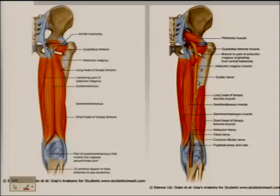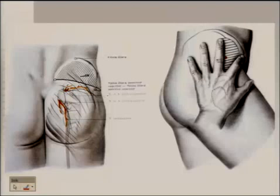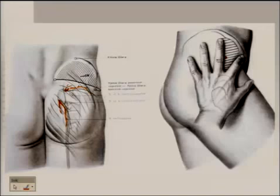A preview of that posterior thigh compartment: the great sciatic nerve lies amidst the very large muscles known as the hamstring muscles. When doing the dissection, there is a certain amount of locations where these blood vessels and nerves are, and you want to avoid those. There is a safe area in the upper posterolateral quadrant of the gluteal region where you can safely put an injection needle without damaging any of these structures — a good practical thing to know.